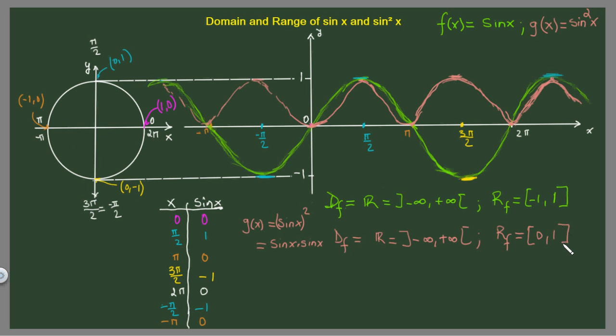That's the range of the function sine to the power 2 of x. You can write it as sine squared of x is less than or equal to zero, and less than or equal to one. Or you can start by zero and end with one.